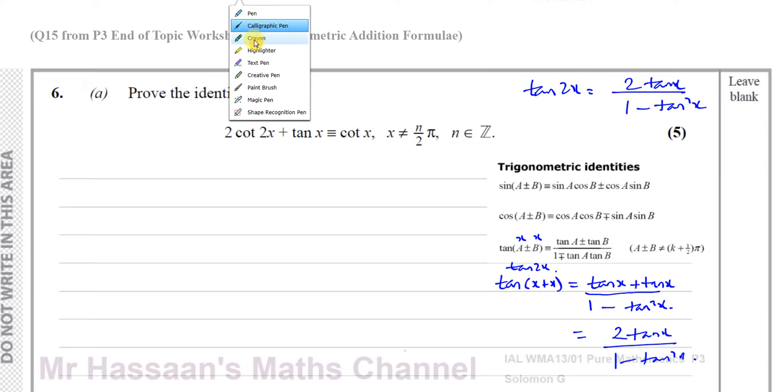So I can use the identity that the tan of 2x is basically 2 times tan x over 1 minus tan squared x. Now, you should memorize this. This is not given in the formula book. This should be something that you should know, you should memorize. But if you do forget it, you can do exactly what I did here, go to the formula book, go to tan a plus b, change it to tan x plus x, and you'll get the expression you need for tan 2x. So I'm going to use this formula now.